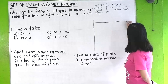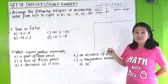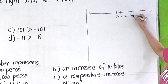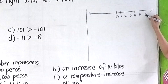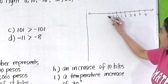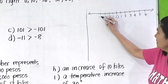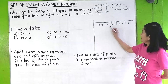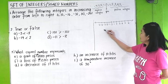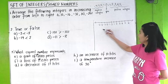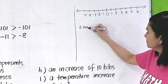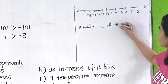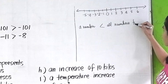When you represent integers on the number line, zero is at the middle. The positive numbers are to the right — five and six. The negative numbers are on the left side: negative one, negative two, negative three, negative four, and negative five. Remember that if a number is on the left side, it is always less than all numbers to its right.